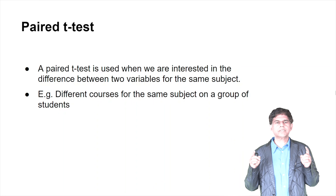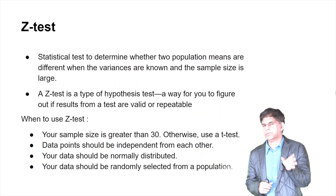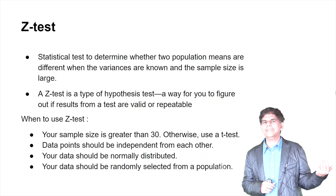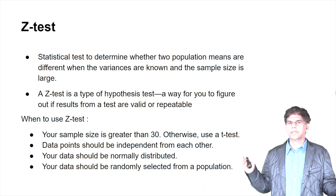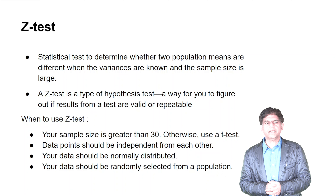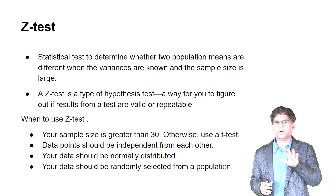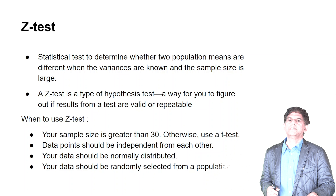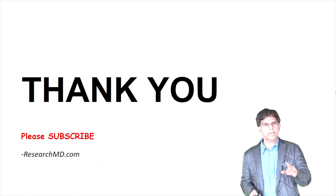The z-test is a statistical test to determine whether two population means are different when the variances are known and the sample size is large. It's a type of hypothesis test to figure out if a result is valid or repeatable. The assumptions for a z-test are: sample size greater than 30, data points should be independent of each other, data should be normally distributed, and data should be random.